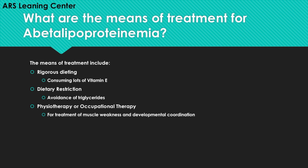What are the means of treatment for abetalipoproteinemia? The means of treatment include rigorous dieting that includes consuming lots of vitamin E, dietary restrictions such as avoidance of triglycerides, and physiotherapy and occupational therapy, which can be done to treat muscle weakness and developmental coordination.